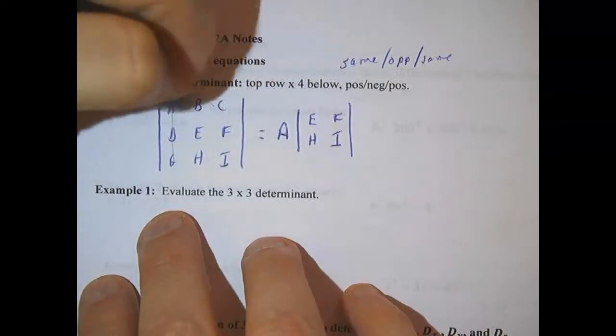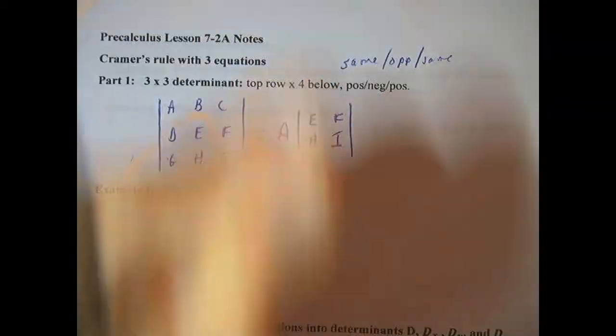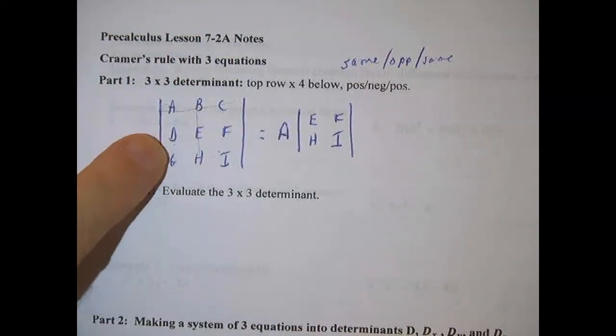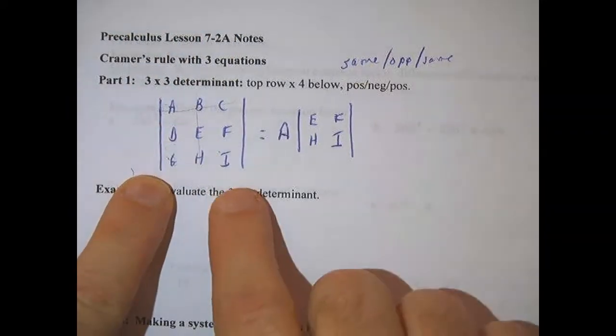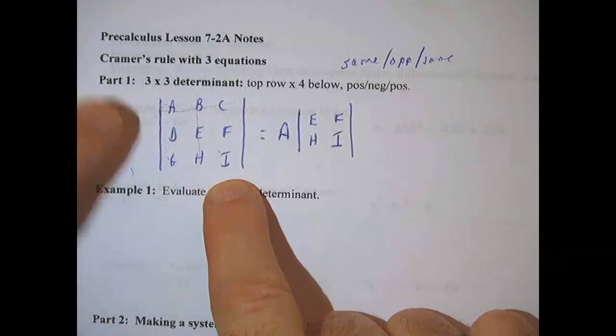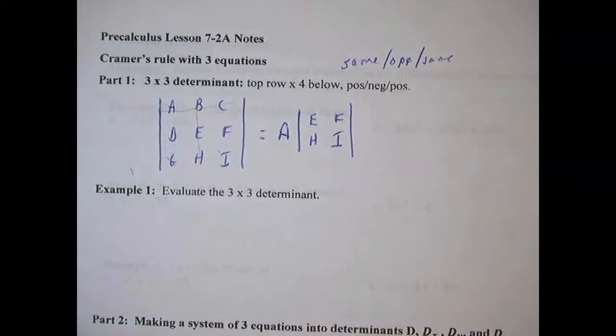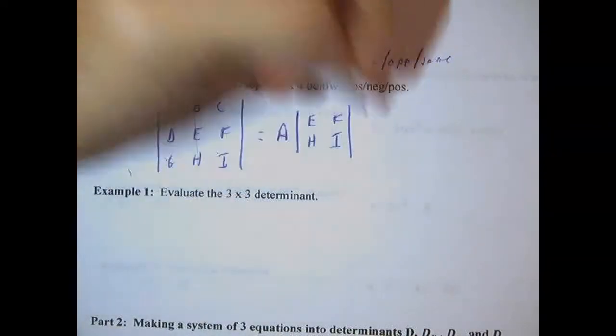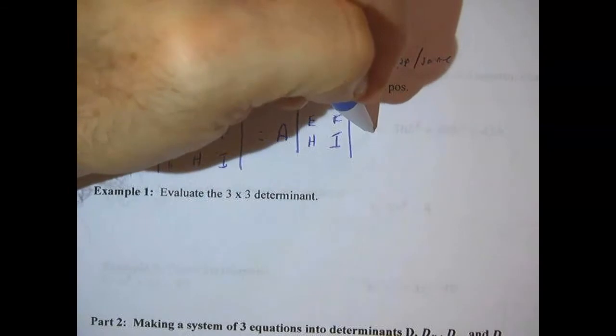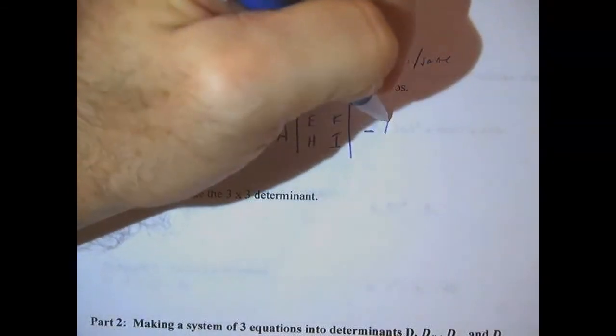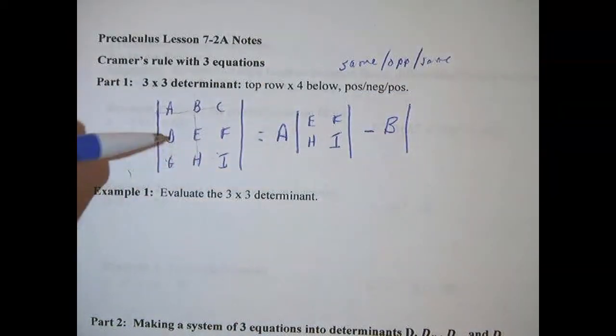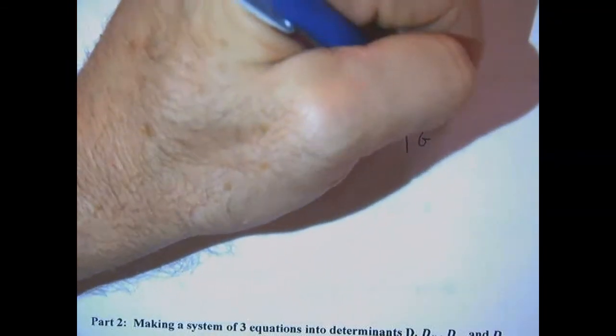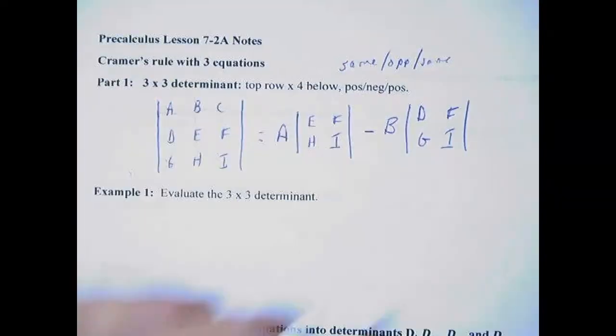I'm going to put a vertical line and a horizontal line through B, leaving me with 2 here and 2 here. Those are going to make another 2 by 2 determinant, which I'm going to multiply by the opposite of B because it's the same opposite. It's subtraction only if this is a positive number, but it's the opposite or minus whatever B is times the two numbers that are left over, DGFI.